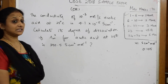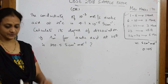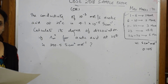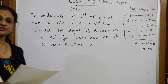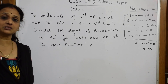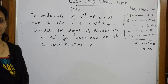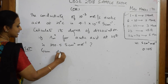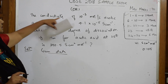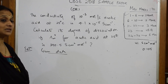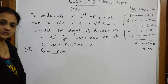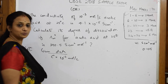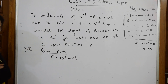Now let's see this question on electrochemistry — the eighth question. Whenever a numerical is given, always write the given data first; you will get marks for that. Given: conductivity κ = 4.1 × 10⁻⁵ S cm⁻¹; concentration c = 10⁻³ mol/L of acetic acid at 25°C.